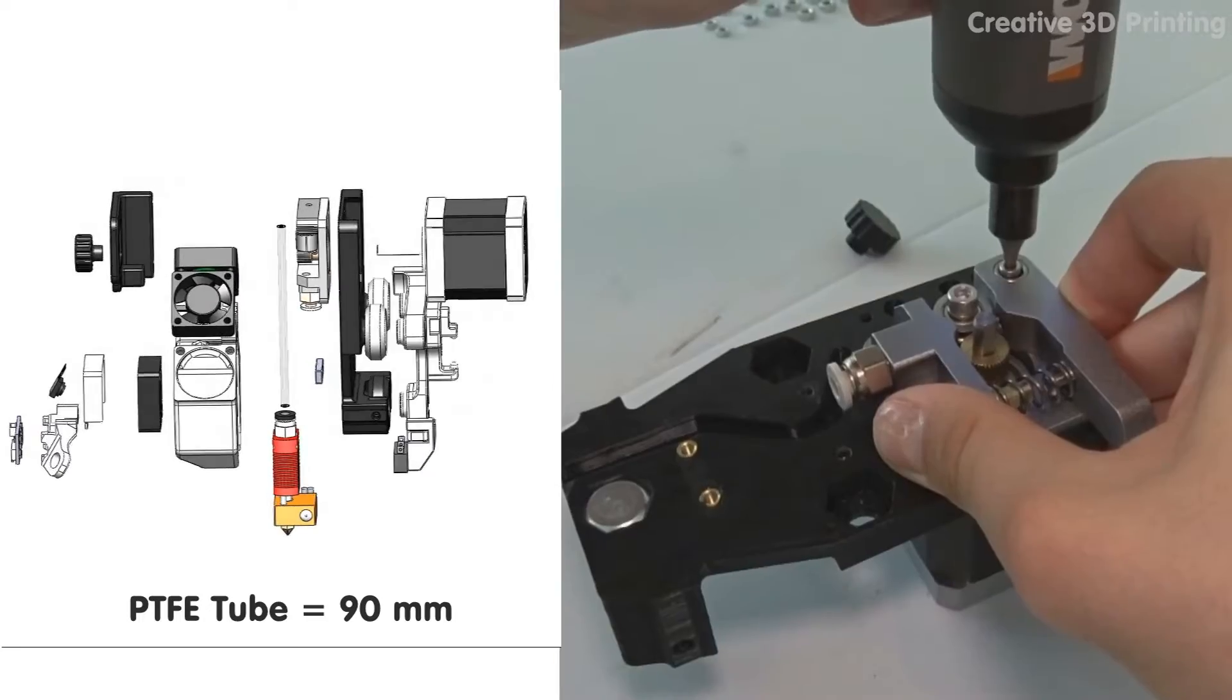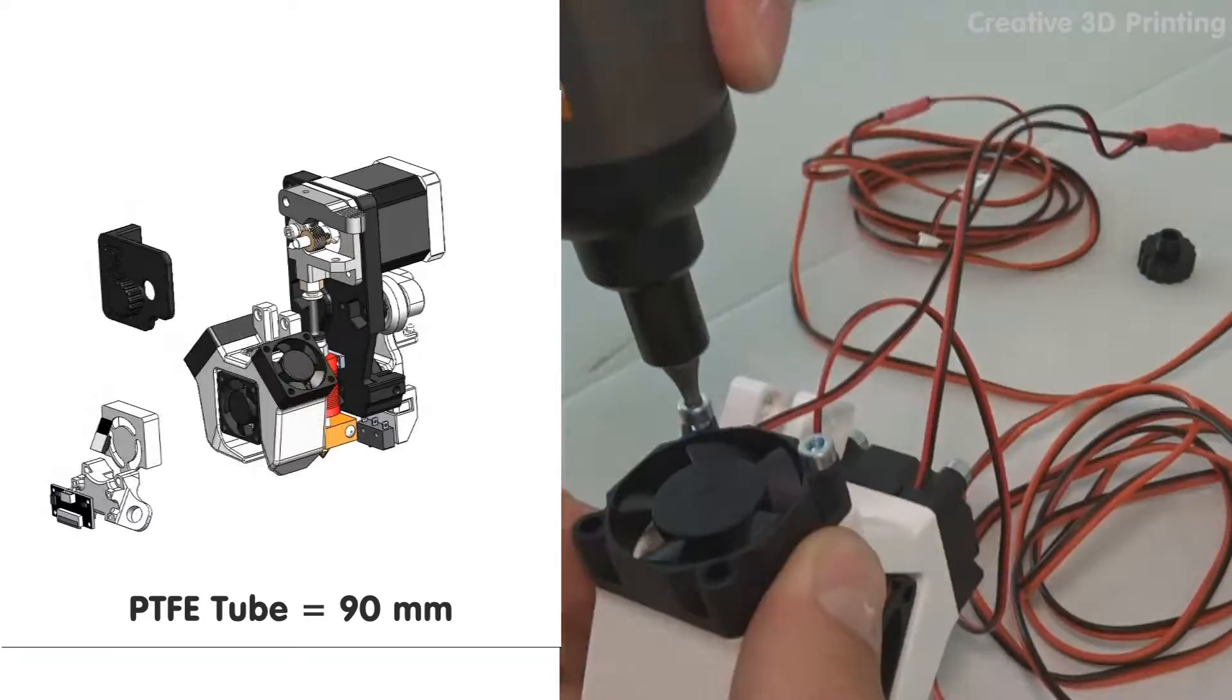Now I make the carriage for the X axis which consists of the extruder, the hotend and the fan duct.